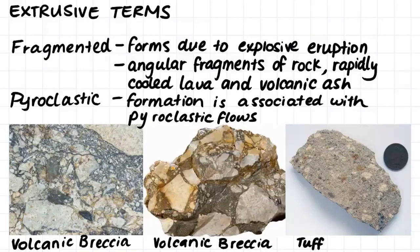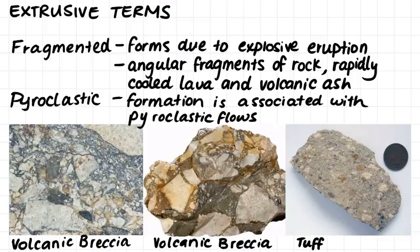The two main types of pyroclastic igneous rock are volcanic breccia and tuff. Volcanic breccia is made up of angular pieces of blasted rock surrounded by lava or volcanic ash gluing these pieces of blasted rock together. Tuff is different to volcanic breccia as it is mostly made up of volcanic ash gluing some smaller chunks of blasted rock together.